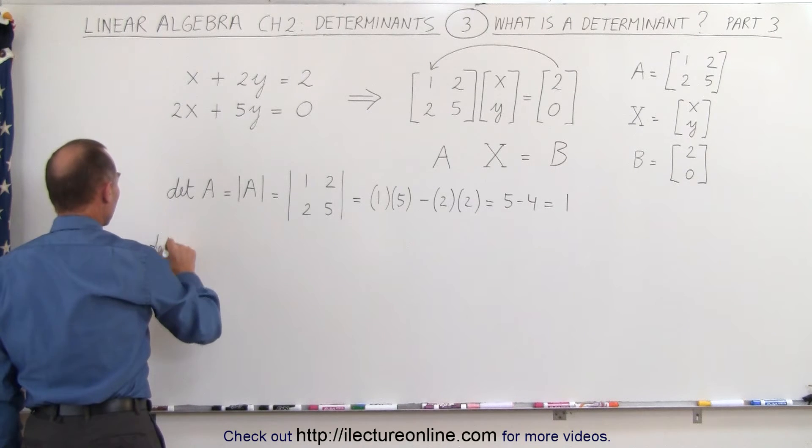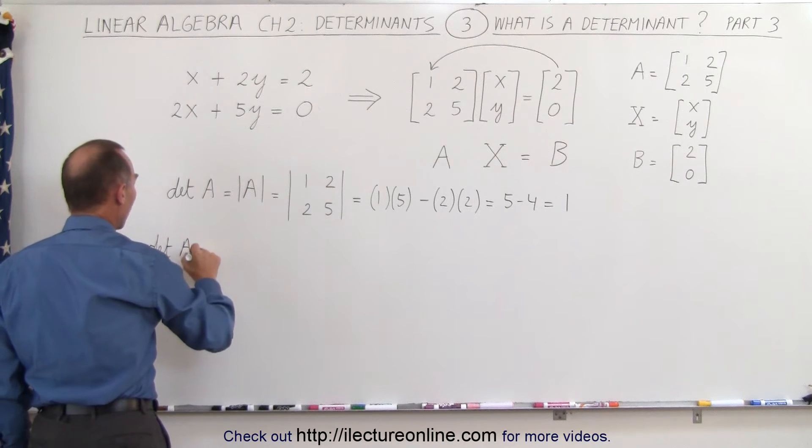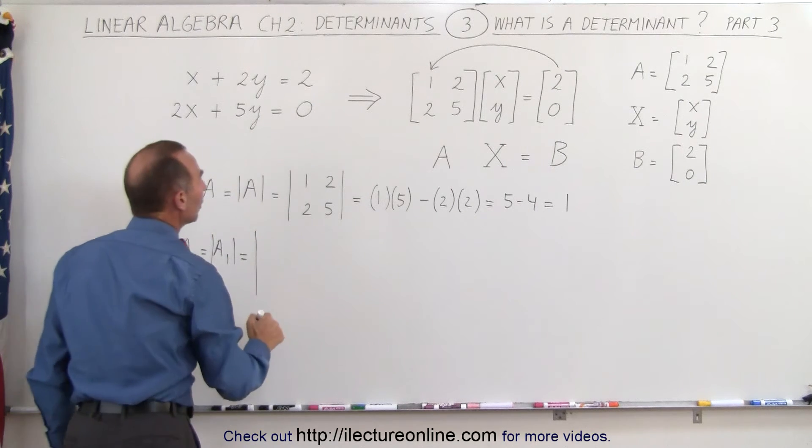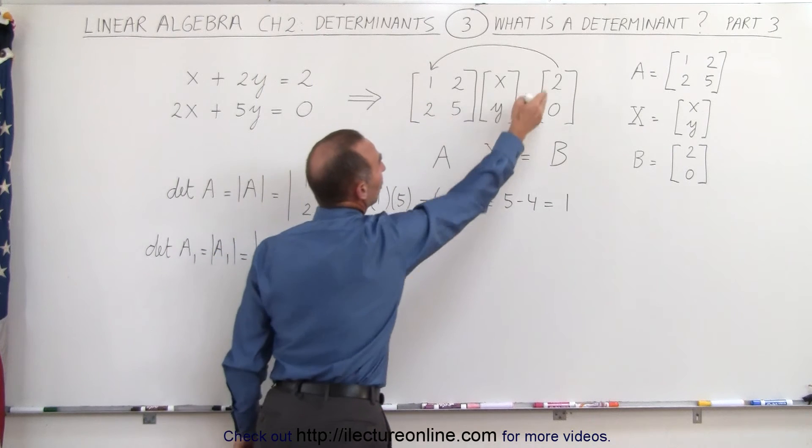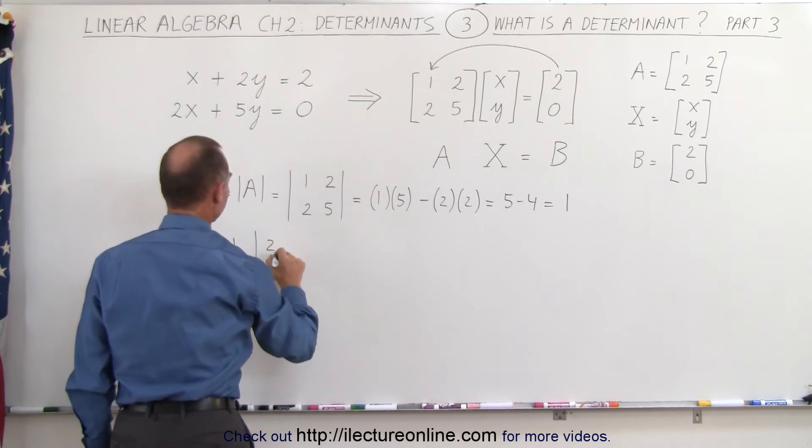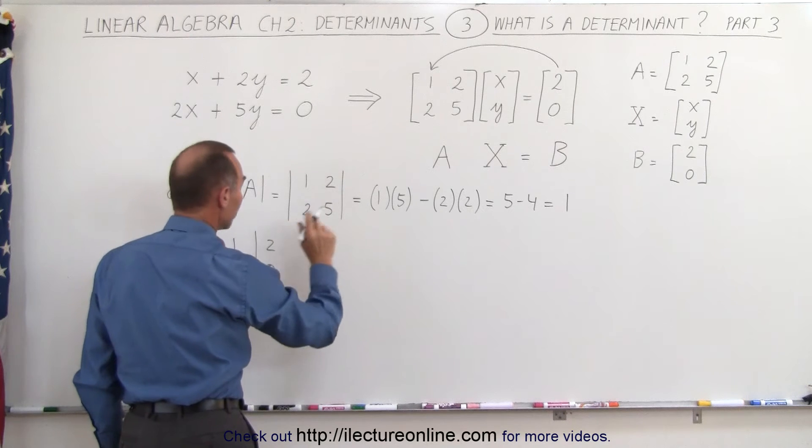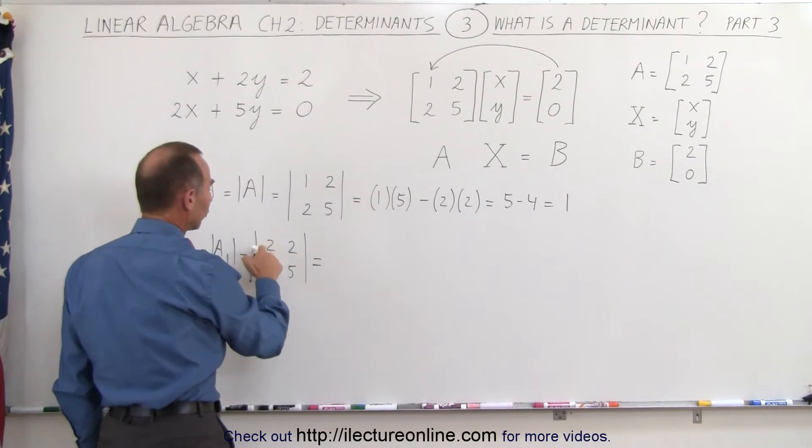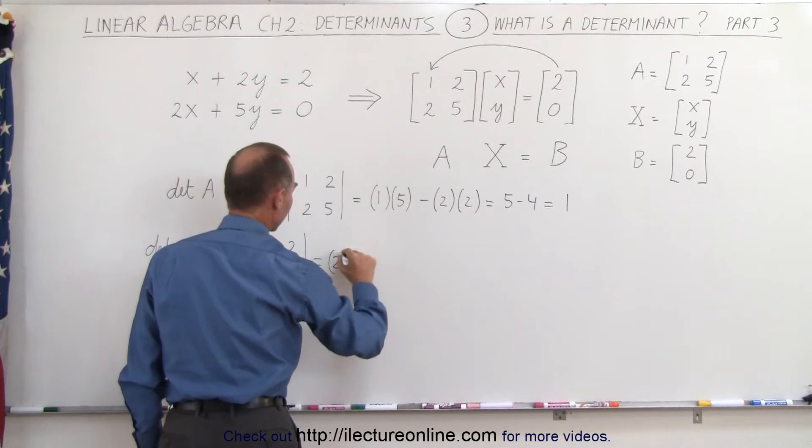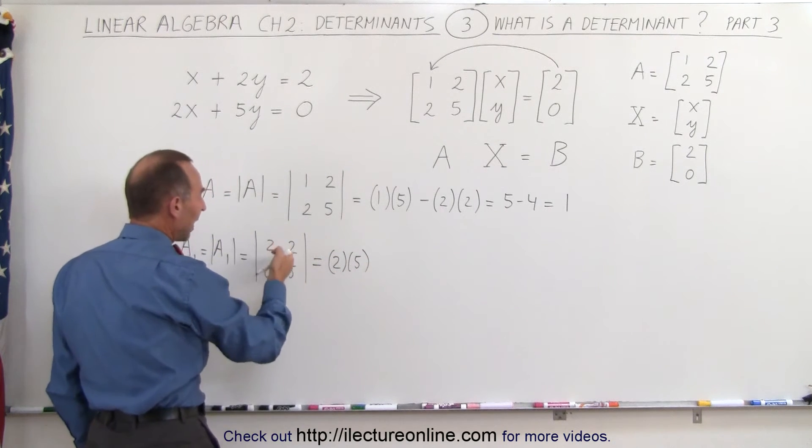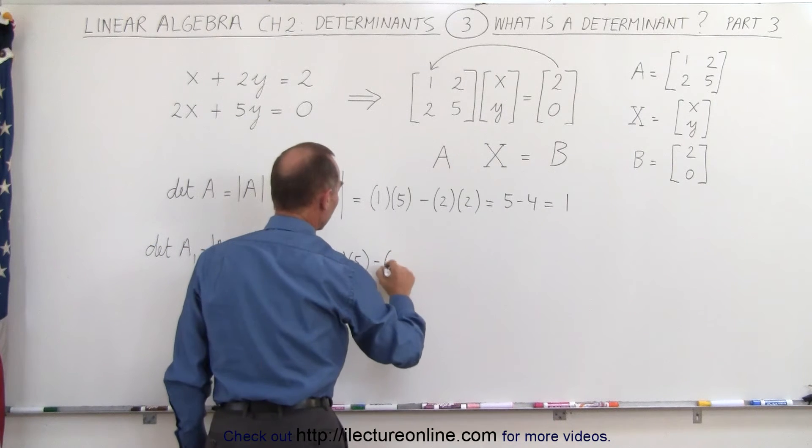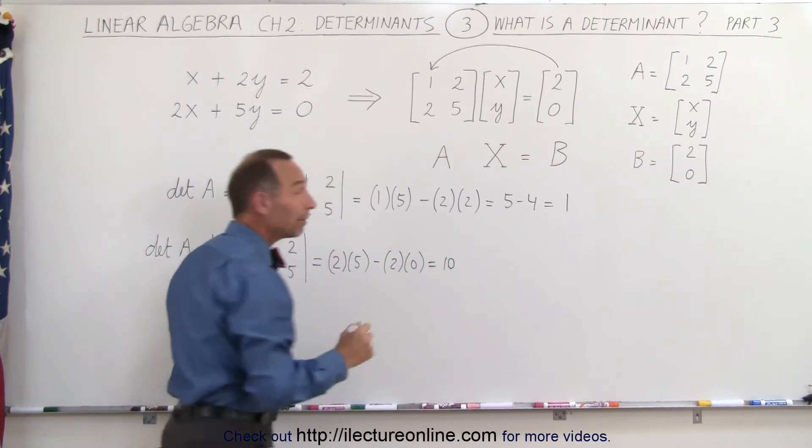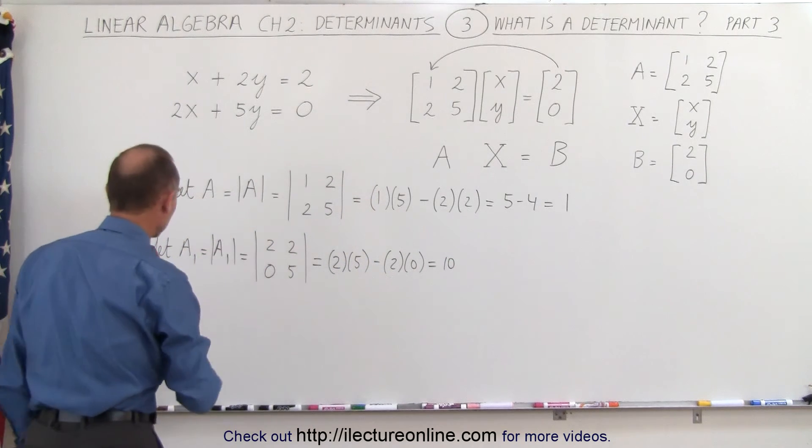The determinant of A1 is written like this: instead of 1 and 2 in the first column, we write 2 and 0. We maintain the second column unchanged, 2 and 5. Working this out, we have 2 times 5 minus 2 times 0, which is 10 minus 0, so we get 10 for that determinant.